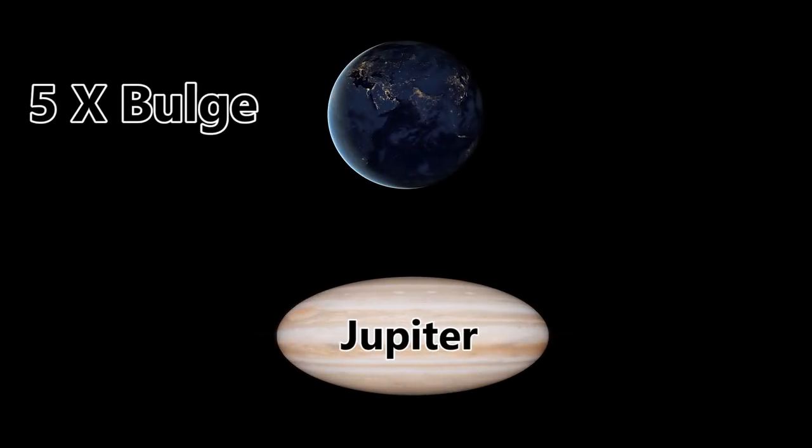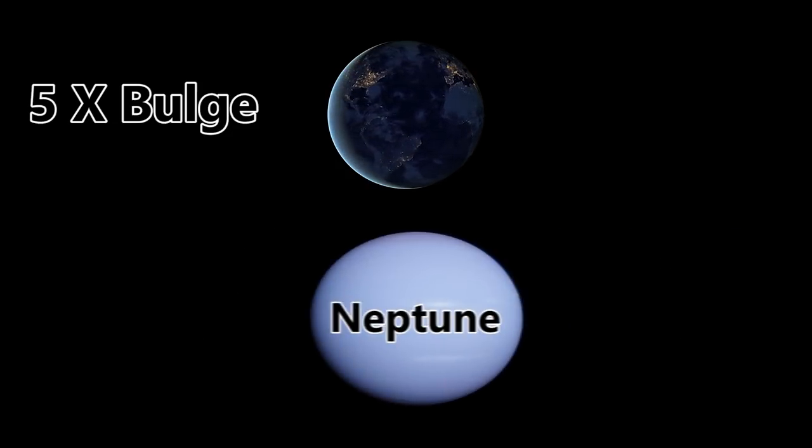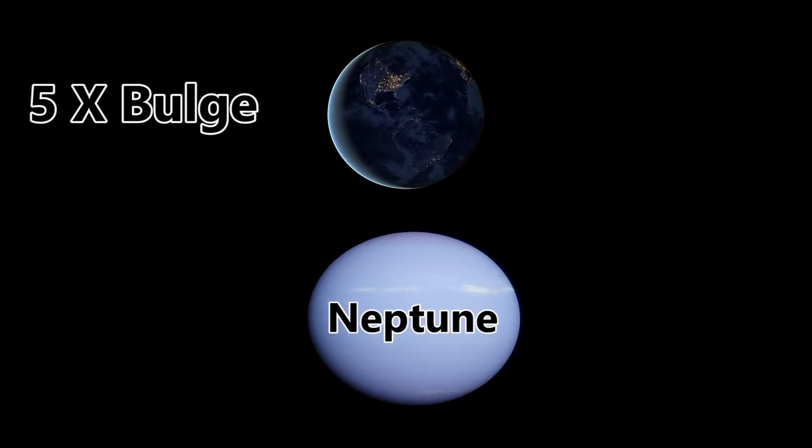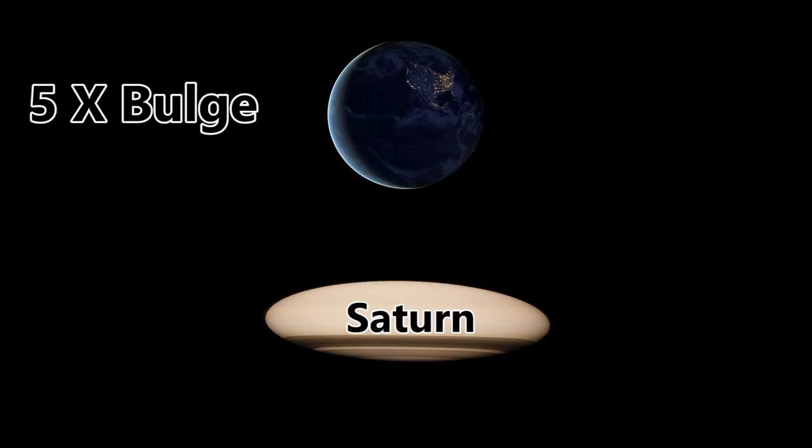Now, as much as I criticize Earth for not exactly being a sphere, there are way worse offenders in our solar system. You know them as the gas giants. You might have not noticed this previously, but if you were to Google search some images of such gas giants, you're actually going to notice the equatorial bulge just from the image. There is no need to exaggerate it. But if I were to exaggerate the equatorial bulge of the gas giants by a mere five times, they end up like someone stepped on them, especially Saturn, which is really, really bad at not exactly being a perfect sphere.